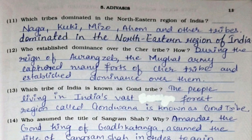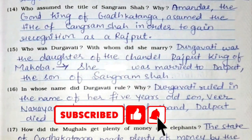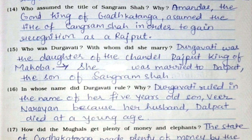Eleventh: Which tribes dominated in the northeastern region of India? Naga, Kuki, Mezo, Ahom, and other tribes dominated the northeastern region of India. Twelfth: Who established dominance over the Chair tribe and how? During the reign of Aurangzeb, the Mughal army captured many forts of the Chair tribe and established dominance over them. Thirteenth: Which tribe of India is known as the Gond tribe? The people living in India's vast forest region called Gondwana are known as the Gond tribe. Fourteenth: Who assumed the title of Sangram Shah and why? The Gond king of Gadkataanga assumed the title of Sangram Shah in order to gain recognition as a Rajput.